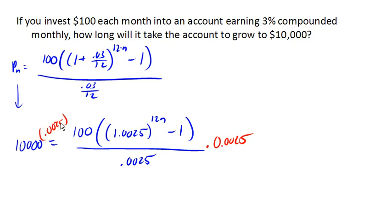On the right-hand side, this is going to reduce or cancel with the denominator there. On the left-hand side, we'll go ahead and multiply it. 10,000 times .0025 is 25.